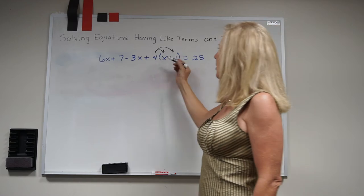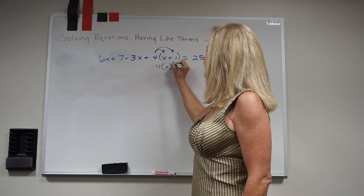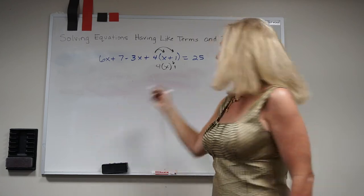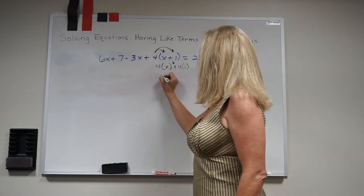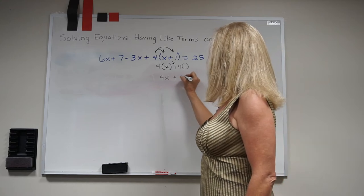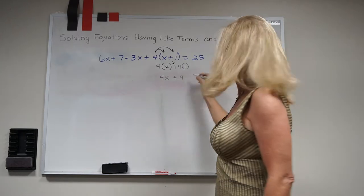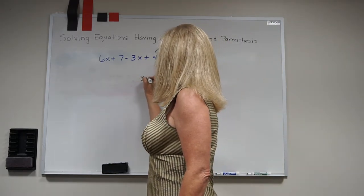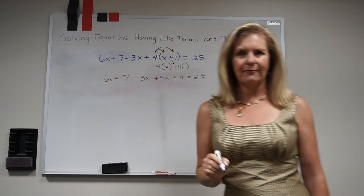So I'm first going to take my 4, multiply it by my first term, bring down that addition sign, and I'm going to do my 4 times my second term. When I actually solve that I get 4x's, those are like my cows, and I get 4, those are like my chickens. Now I still have the rest of the equation to solve, so I'm just going to rewrite the rest of that equation and now I'm ready for my next step.